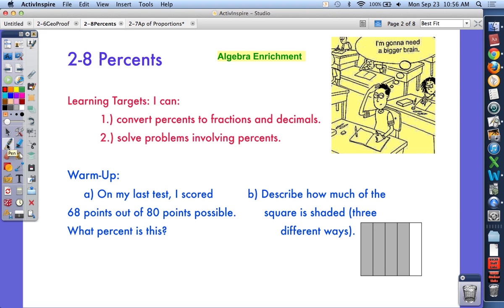For the first warm-up, on my last test I scored 68 out of 80. What percent is this? You're taking 68 over 80 and figuring out what percent that is. I would reduce it—think about what I could take out of both. I could take out a 4. When I take out 4, I get 17 out of 20. Remember that a percent is always out of 100, so I want to multiply to get 100 on the denominator. Multiply 20 by 5, so multiply the top by 5, which gives me 85. This is an 85% score on that test.